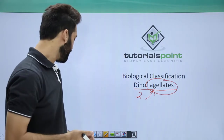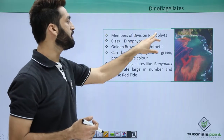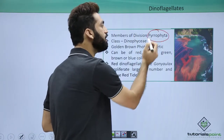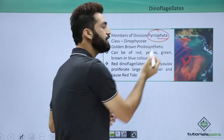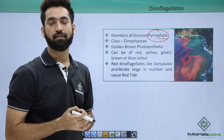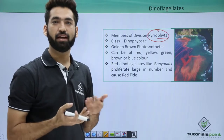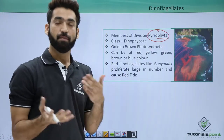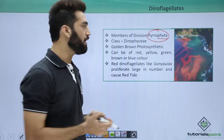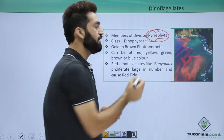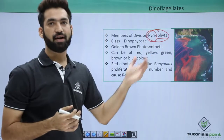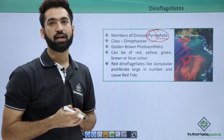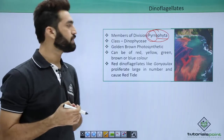Dinoflagellates belong to the division Pyrophyta. Phyta refers to plants, basically algae, because they have a photosynthetic mode of nutrition — they behave like plants. Pyro means fire, so they are fire algae. They are called fire algae because they have the property of bioluminescence — they glow at night.